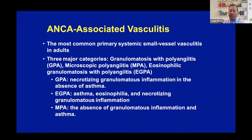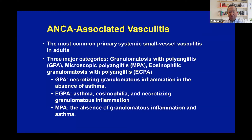So ANCA-associated vasculitis is the most common primary systemic small vessel vasculitis in adults. There are three categories: granulomatosis with polyangiitis (GPA), microscopic polyangiitis (MPA), and eosinophilic granulomatosis with polyangiitis (EGPA). GPA is characterized by necrotizing granulomatous inflammation in the absence of asthma. EGPA is characterized by asthma, eosinophilia, and necrotizing granulomatous inflammation. MPA is the absence of granulomatous inflammation and asthma — just small vessel vasculitis.